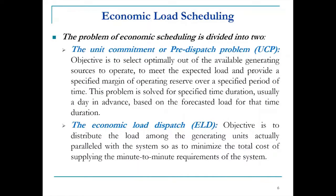Economic load scheduling can be divided into two categories. First is the Unit Commitment Problem (UCP), also called the pre-dispatch or offline problem. Here, from many available generating stations, we determine which ones should operate to meet the expected load for a particular period — typically decided a day in advance based on forecasted load.